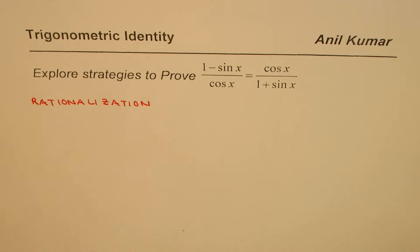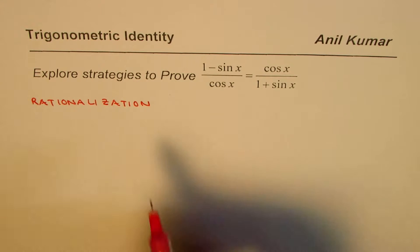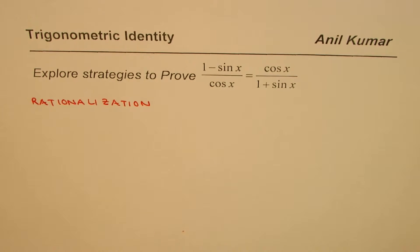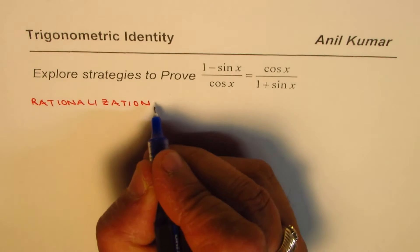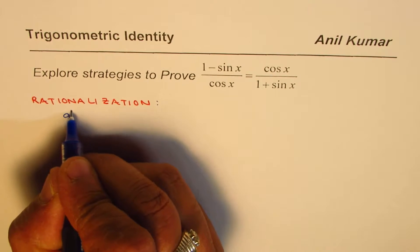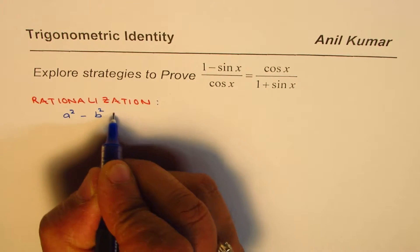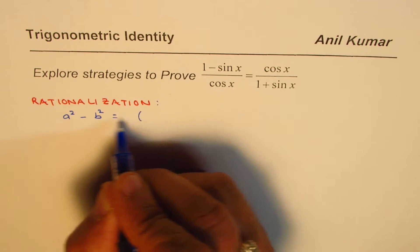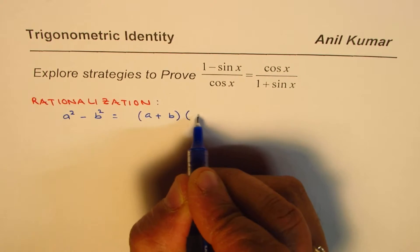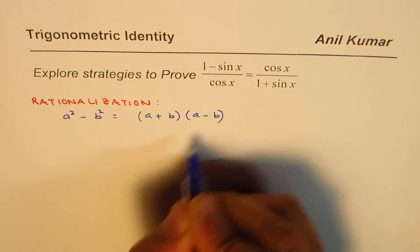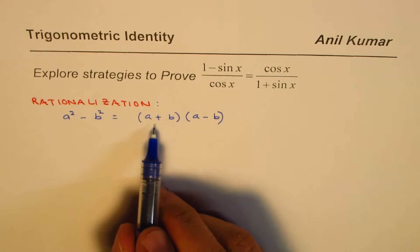Now, rationalization - how does it work? You know what a² - b² equals, right? Well, a² - b² = (a + b)(a - b).